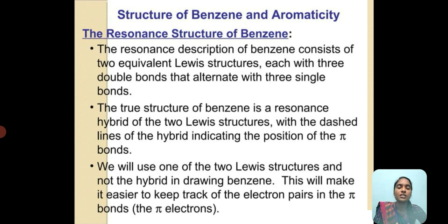The resonance description of benzene consists of two equivalent Lewis structures, each with three double bonds that alternate with three single bonds—these are conjugated bonds. The structure of benzene is a resonance hybrid of the two Lewis structures, with dashed lines indicating the position of the pi bonds. We will use one of the two Lewis structures, not the hybrid, when drawing benzene.